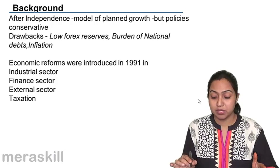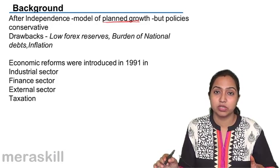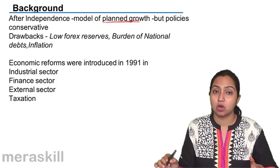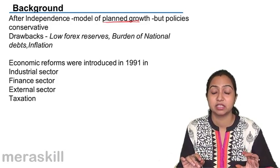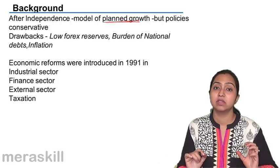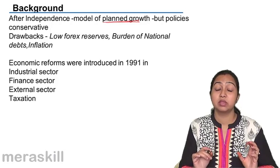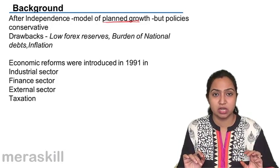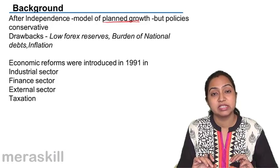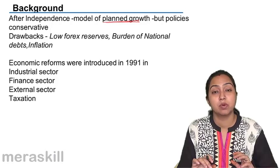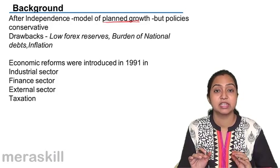At that time, we adopted a model of planned growth — plans were made and according to that, the government followed its policy of growth. But the policies that were adopted were very conservative in nature and they aimed at transferring resources from the private sector to the public sector, because it was felt that the government could take care of social needs better than the private sector. It was felt that the private sector would be profit-motivated and would not consider the social good at large. So the public sector was given more preference, and all policies — fiscal, monetary by the RBI, and foreign sector policy — were aimed at channeling resources from the private sector to the public sector.